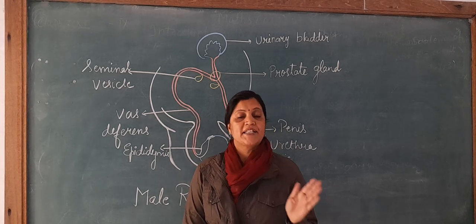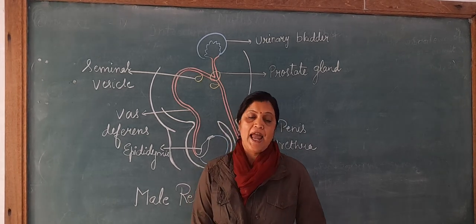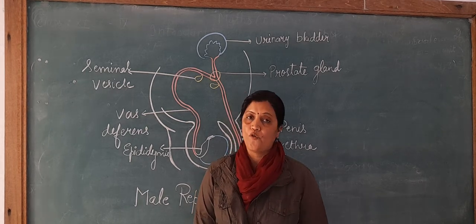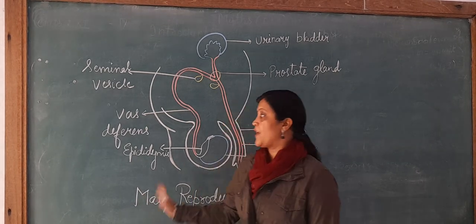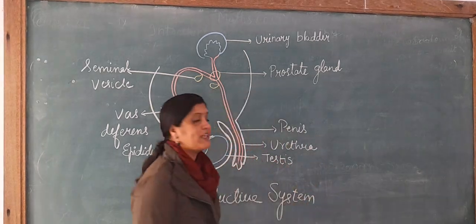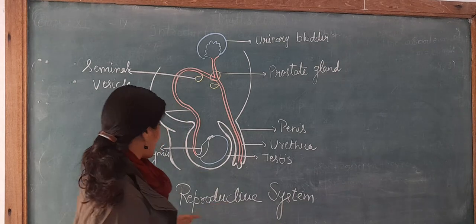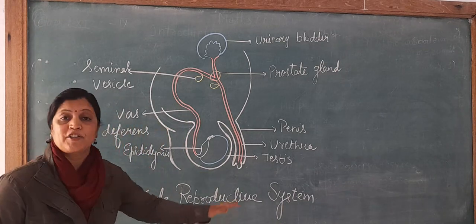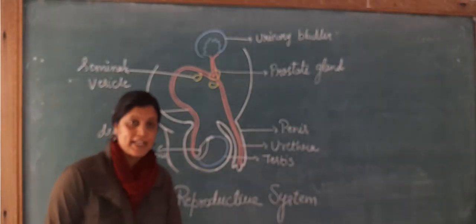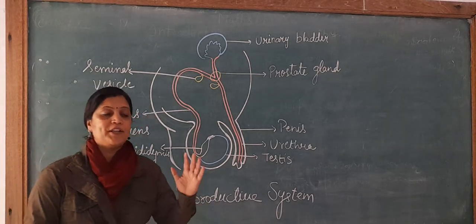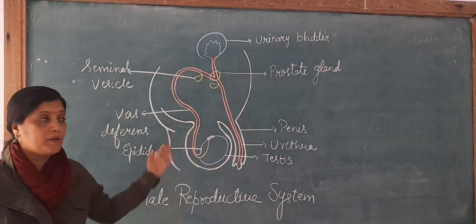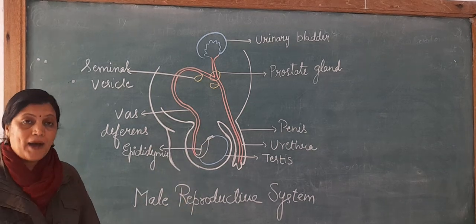In girls, puberty age is near 10 to 12, and in boys it is 13 to 14. In today's class, we will discuss the male reproductive system — what are the organs that make up the male reproductive system and help develop secondary sexual characters at the age of puberty. These are the main parts.